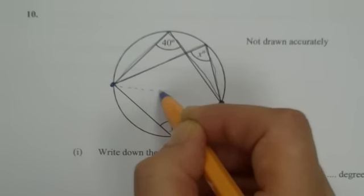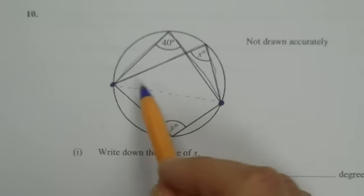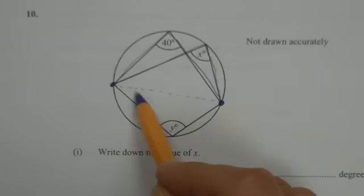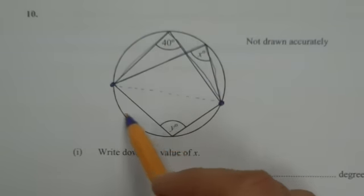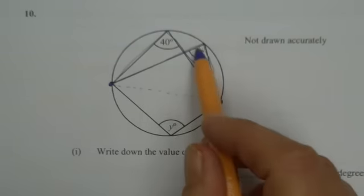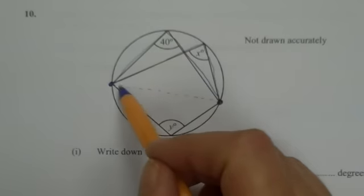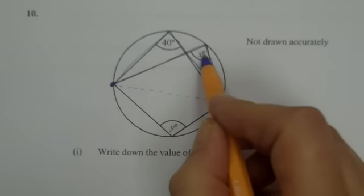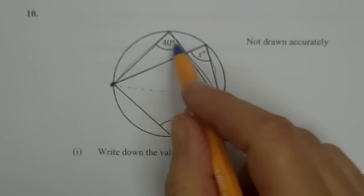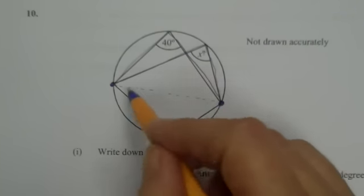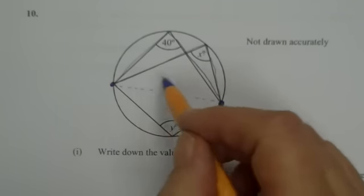By the same segment, what I mean is, this chord between the two points splits the circle into this segment and this segment. As long as they're drawn into the same segment from that line, then these two angles are equal to each other. So two angles drawn into the same segment from the same two points are equal.